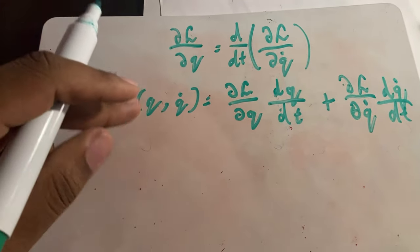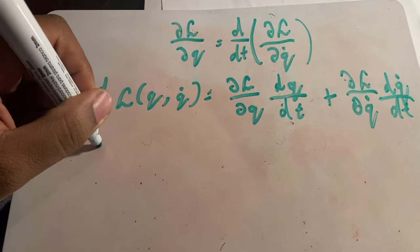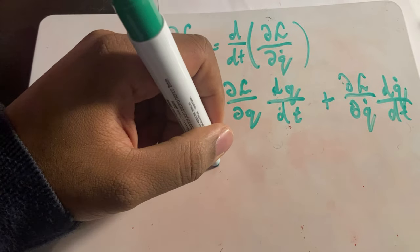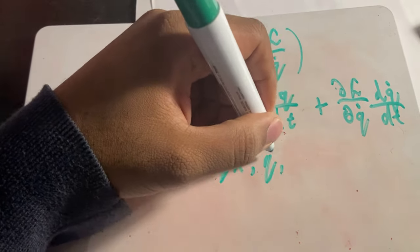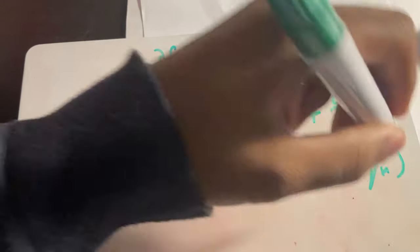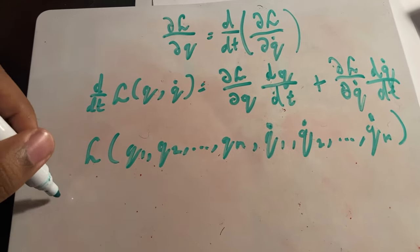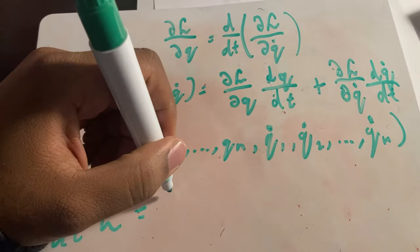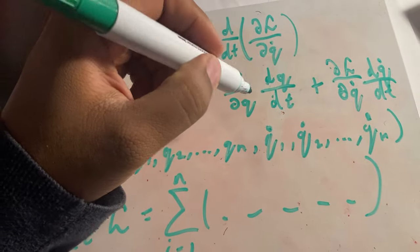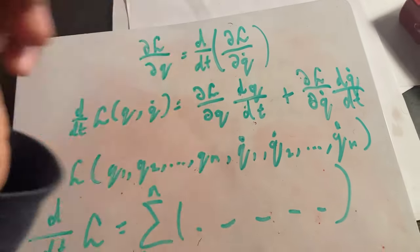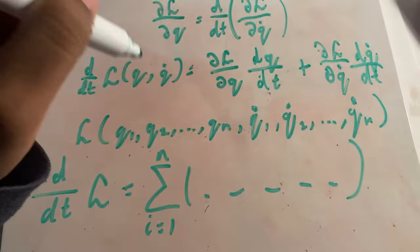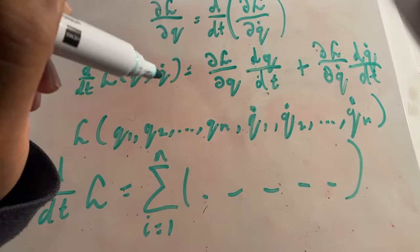If the Lagrangian depends on multiple canonical coordinates — q1, q2, up to qn, and q-dot 1 through q-dot n — then the total derivative expression has a summation from i=1 to n in front, with each q and q-dot getting an index i. That's the only change when going from one to multiple canonical coordinates.